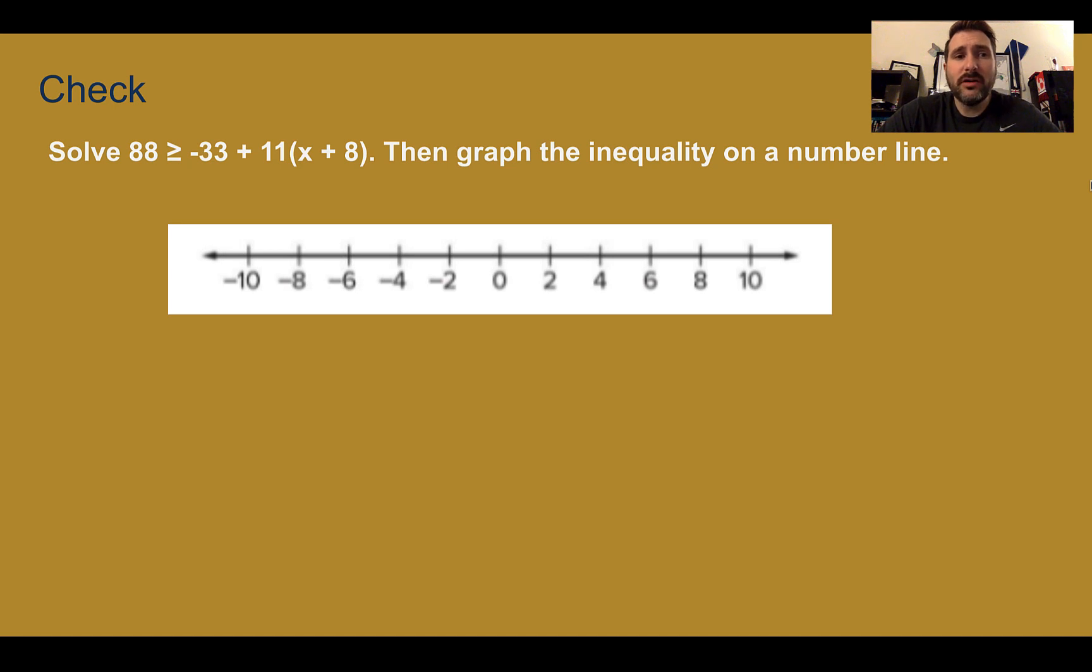Check your understanding. Solve the inequality and graph on a number line. You may use Desmos to help you out or to check your answer. Pause the video now and complete the check. Check your answer. First, you should have got x ≤ 3, which means you're drawing a closed circle at 3 with your arrow to the left. If you did it on Desmos, you would end up with a solid line at 3 and it would have been shaded over here.